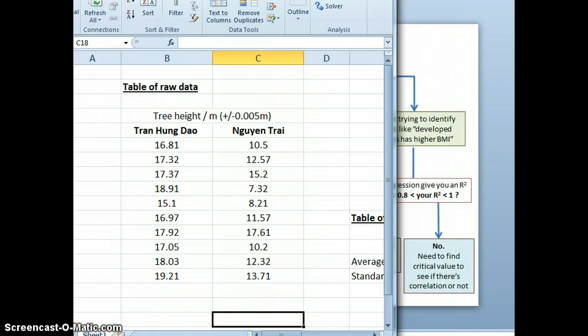So let's do this through an example. Let's say I have an example of a table of raw data right here. And this data is about the tree heights that I obtained from, let's say, that I measured from Chen Hing Dao Street and Nguyen Chi Street.